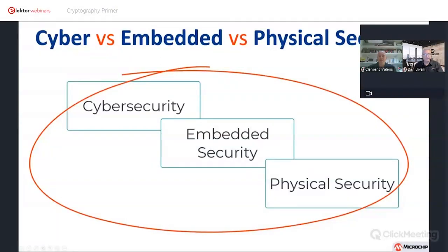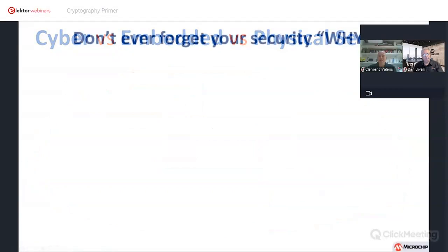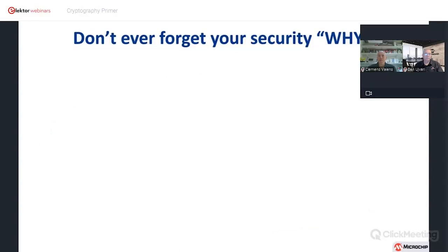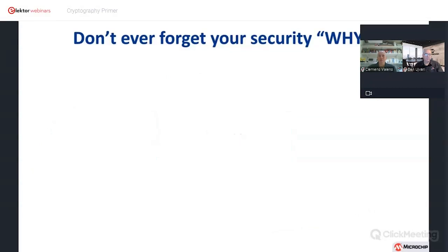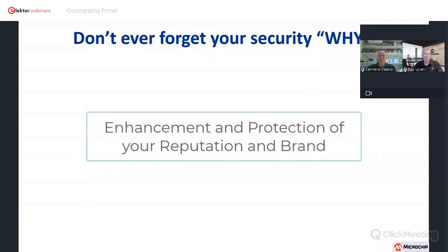Physical security simply makes adversaries conspicuous if they try to hack something in a public space, but does little if they have physical possession of the device. While designing security into your project, never forget the primary reason you're doing it. The primary reason we implement robust security is for the enhancement and protection of your organization's reputation and brand. Without that, nobody has a job and no secure devices are being made — so that is the primary thing we're all protecting.